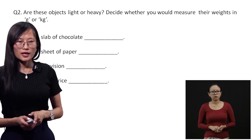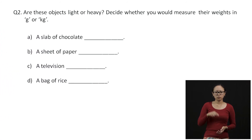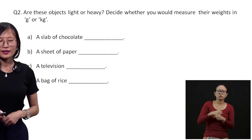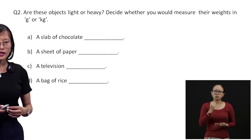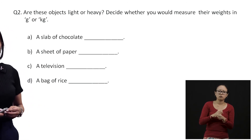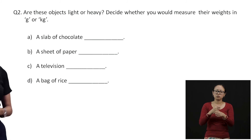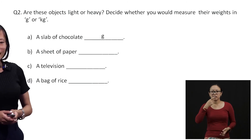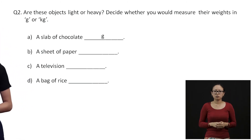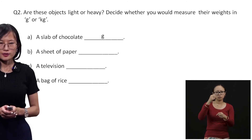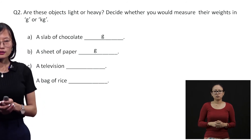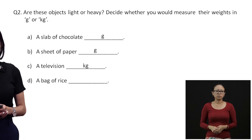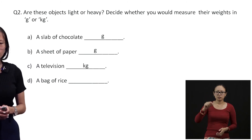Are these objects light or heavy? Decide whether you would measure their weight in grams or kilograms. A slab of chocolate — it is a lighter object, so we use grams. A sheet of pepper — grams. A television — kilograms. A bag of rice — kilograms.